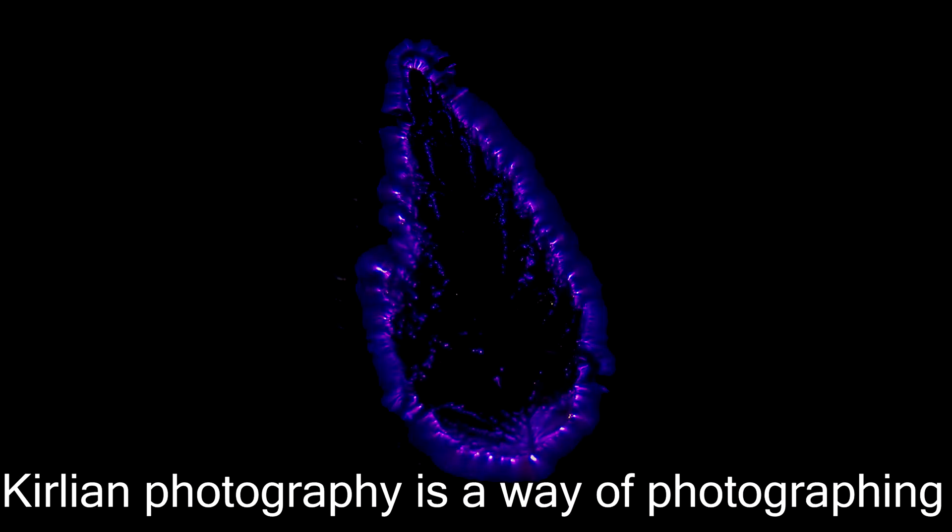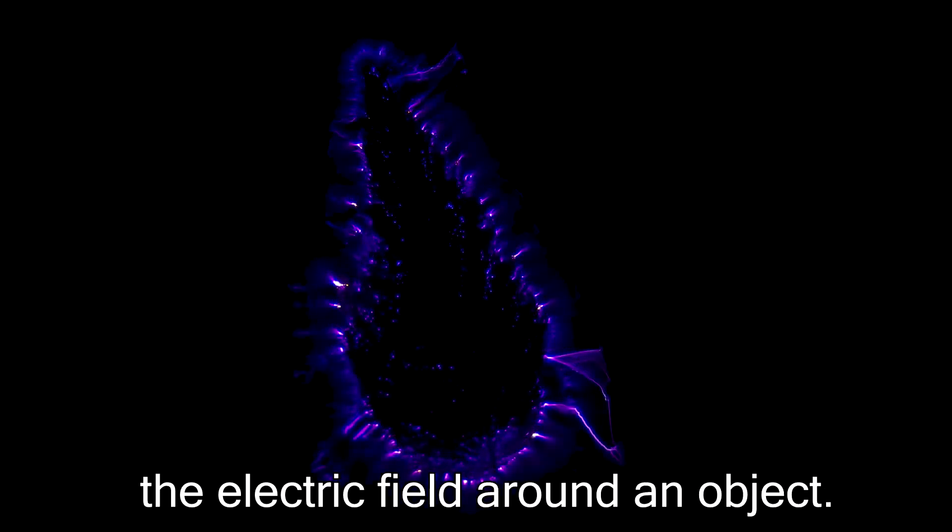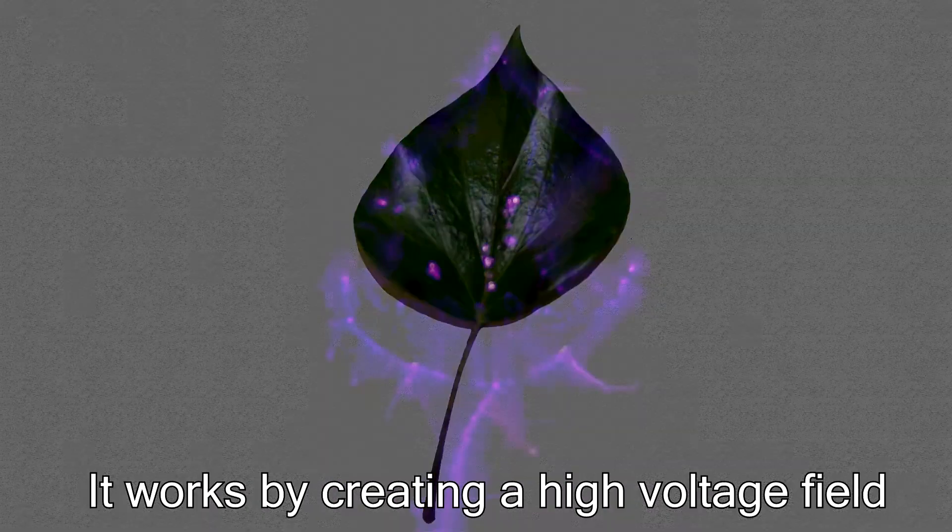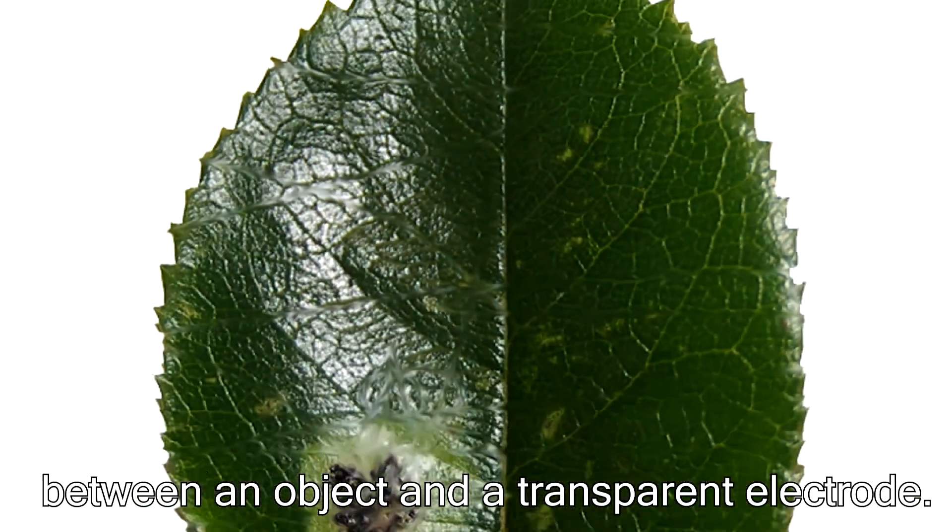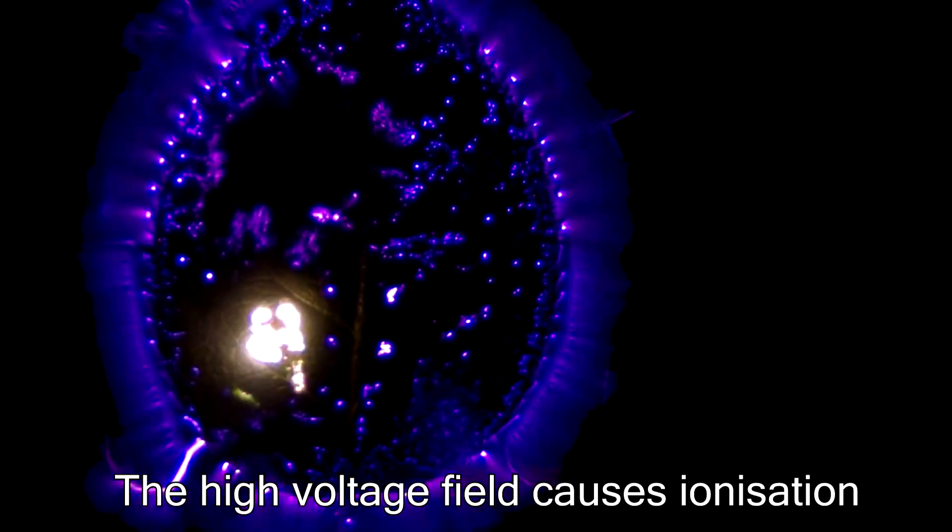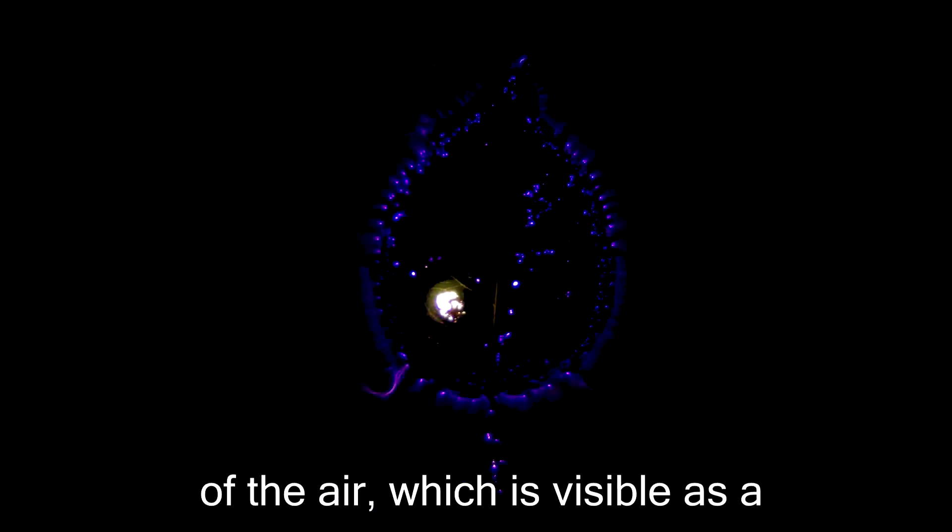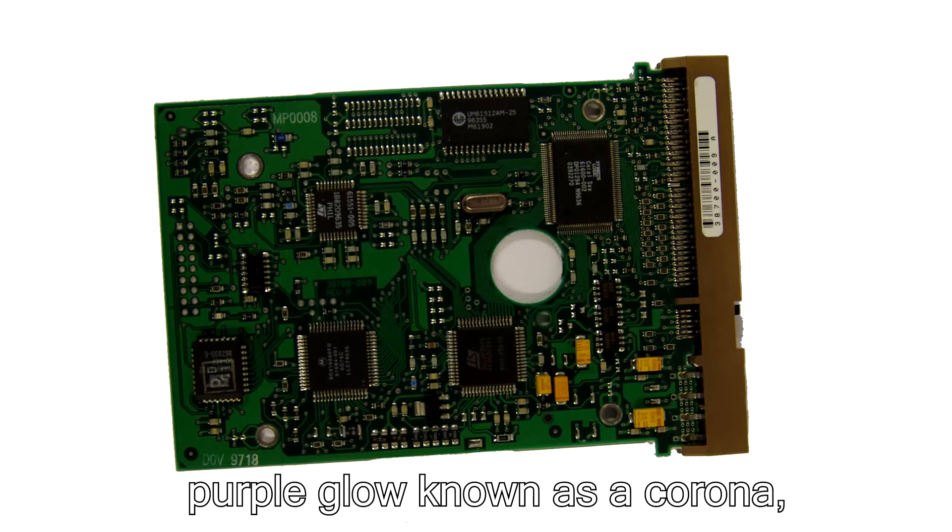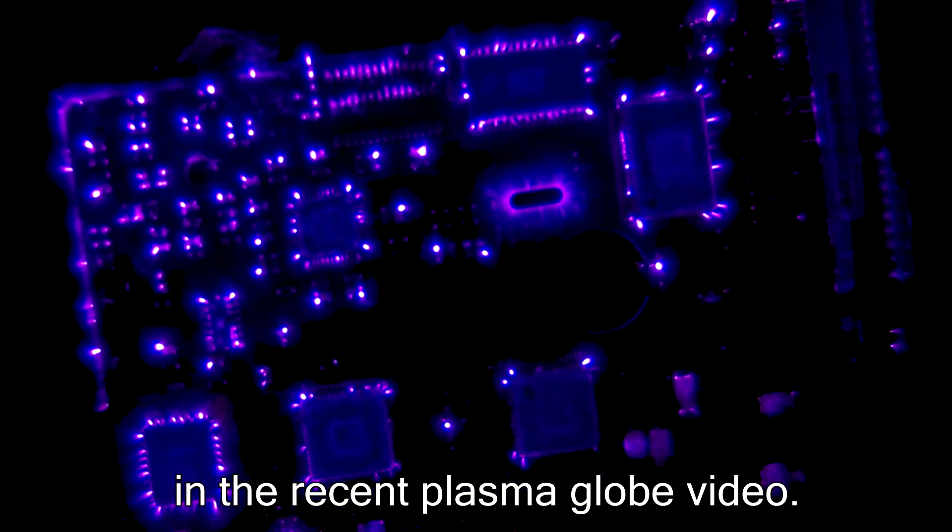Kirlian Photography is a way of photographing the electric field around an object. It works by creating a high voltage field between an object and a transparent electrode. The high voltage field causes ionisation of the air, which is visible as a purple glow known as a corona, similar to what can be seen in a recent plasma globe video.